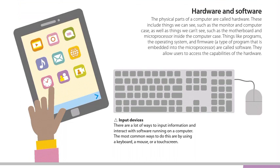Hardware and software: the physical parts of a computer are called hardware. These include things we can see, such as the monitor and computer case, as well as things we cannot see, such as the motherboard and microprocessor inside the computer case.